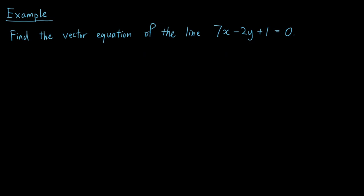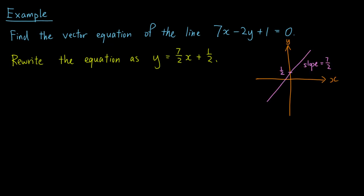Let's also do one example of converting a Cartesian equation into a vector equation. Suppose we have a line, 7x - 2y + 1 = 0. First, we rewrite the equation as y = (7/2)x + 1/2. We can draw this line out, and it means that the slope of the line is 7/2, and the y-intercept is 1/2.